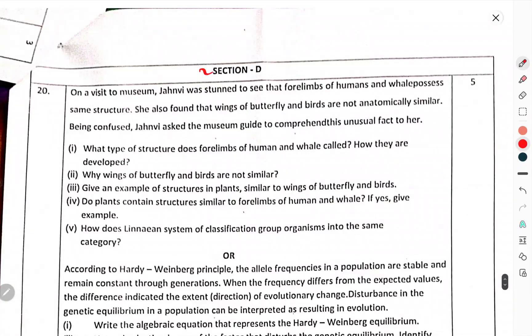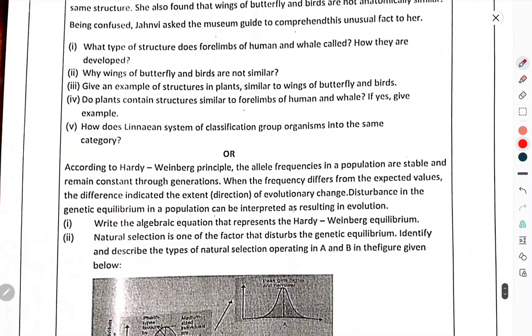Now we come to Section D. On a visit to a museum, Janvi was stunned to see that the four limbs of humans and whales possess similar structure. She also found that wings of butterflies and birds are superficially similar. Being confused, Janvi asked the museum guide to explain this unusual fact to her.